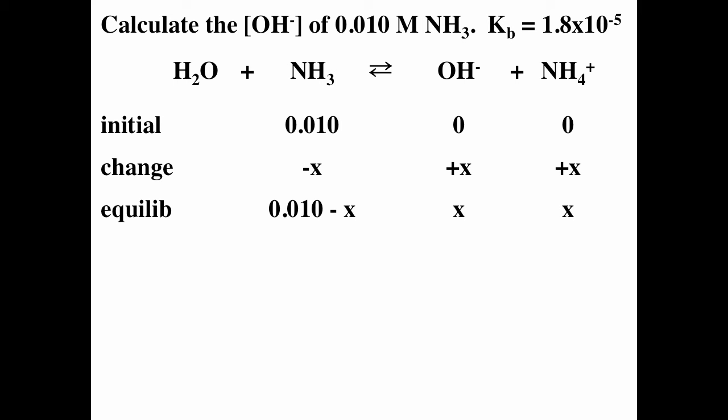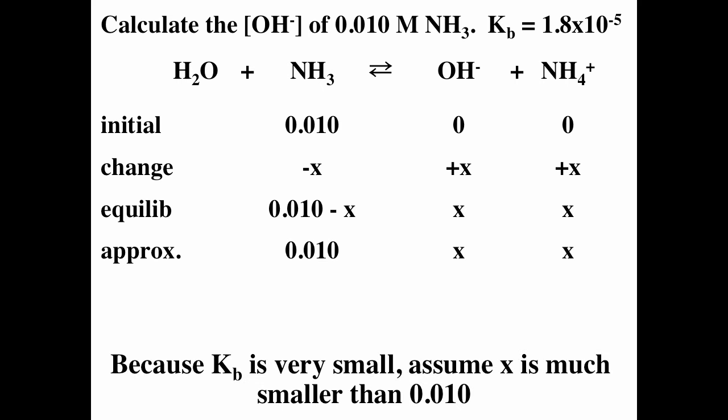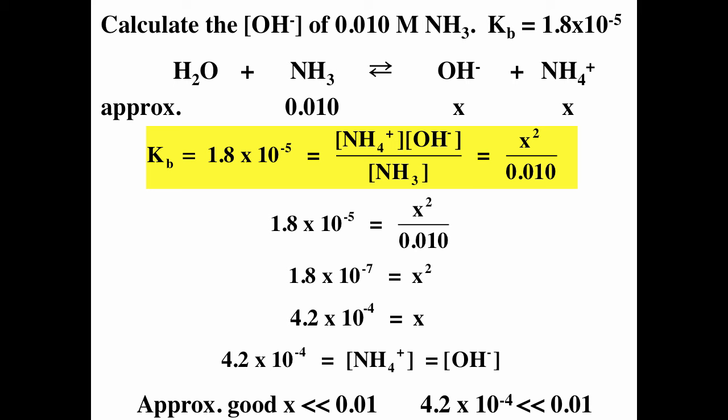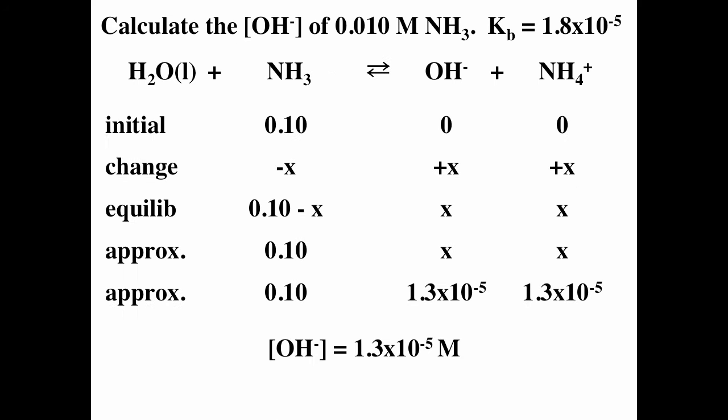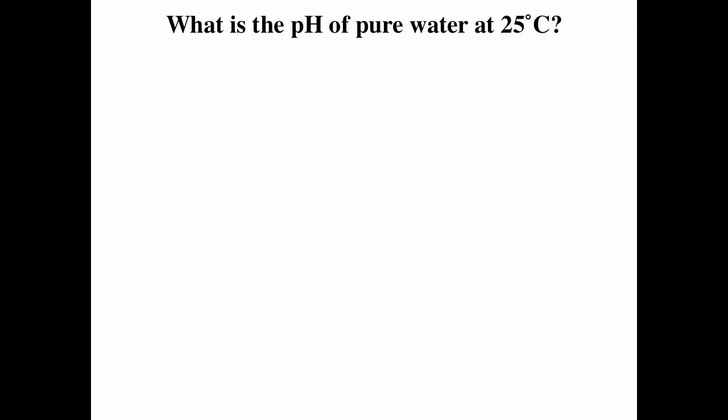Kb for ammonia is 1.8 × 10⁻⁵ — the same as Ka for acetic acid. Since Kb is very small, we assume x is negligible compared to 0.01, giving x² / 0.01 = 1.8 × 10⁻⁵. Solving: x² = 1.8 × 10⁻⁷, so x = 4.2 × 10⁻⁴. The hydroxide ion concentration at equilibrium is 4.2 × 10⁻⁴ M. Always check your approximations at the end to make sure they're valid.